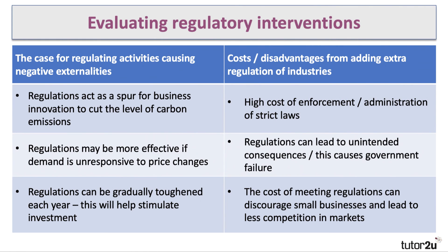Regulation is a key aspect of government approach to externalities and there's a strong case for it. It acts as a spur for business innovation to cut emissions, and may be more effective than carbon taxes, particularly if demand for carbon permits is price-inelastic. Each year you can tighten the regulations to stimulate low-carbon green investments. However, regulations come with costs — enforcement costs, administration costs — and there's always the risk of unintended consequences, which is a cause of government failure. High levels of regulation can be a significant burden on small businesses, potentially dissuading them from entering markets, which could lead to a further market failure arising from monopoly power.